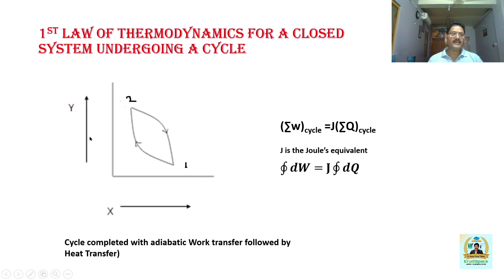X and Y are your generalized thermodynamic coordinates. It may be pressure-volume, it may be temperature-entropy, any combination. You do have two processes, process one-two and two-one. Cycle consists of two processes. One-two represents an adiabatic work transfer process followed by two-one which is a heat transfer process. What he found is that the work transfer is directly proportional to the heat transfer. In fact, the summation of work transfer in a cycle is found to be J times the summation of heat transfer in a cycle.